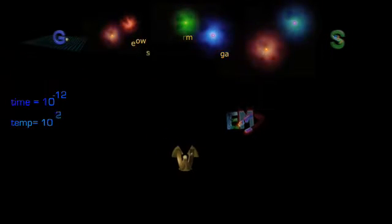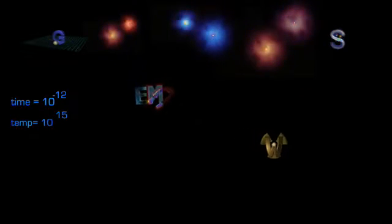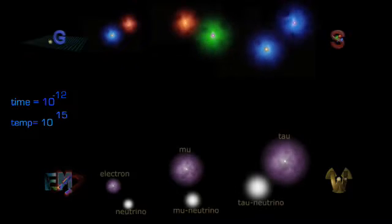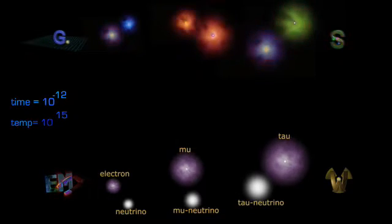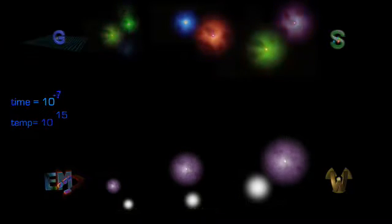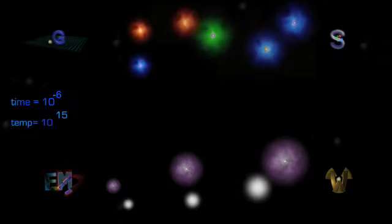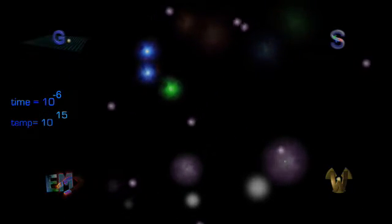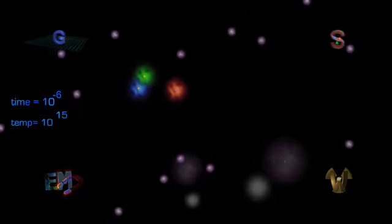This expansion and cooling allows six different types of quarks to form. At 10 to the minus 12 seconds and 10 to the 15 degrees, the weak force and electromagnetism separate, and we have the four independent forces we know today. At this point, all six types of leptons have formed, including the electron. At 10 to the minus 6 seconds, up and down quarks have formed protons and neutrons. All heavy quarks have decayed.